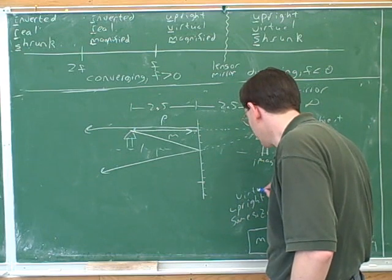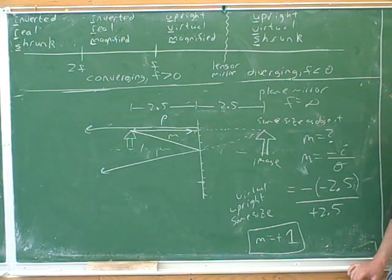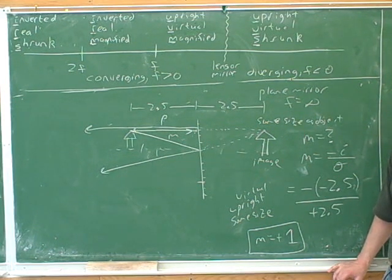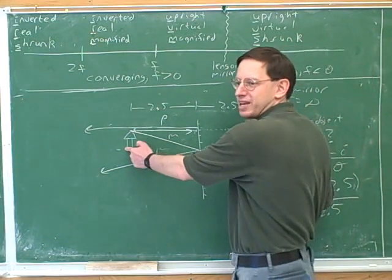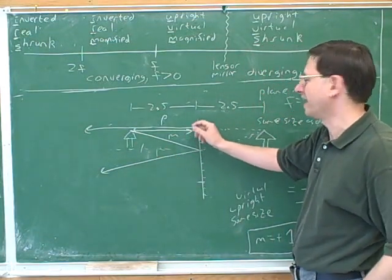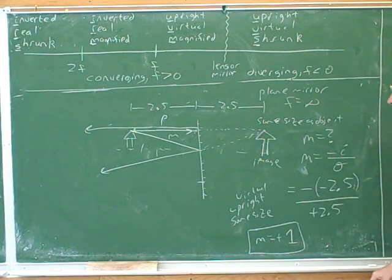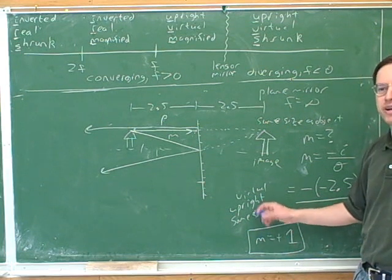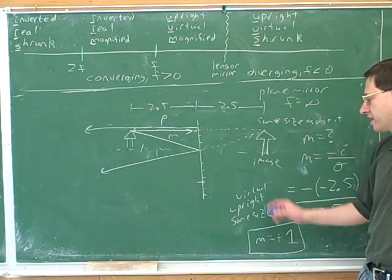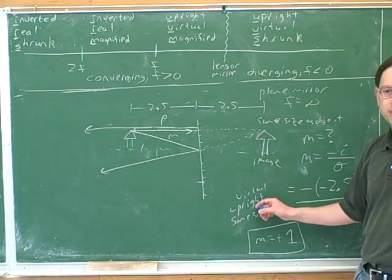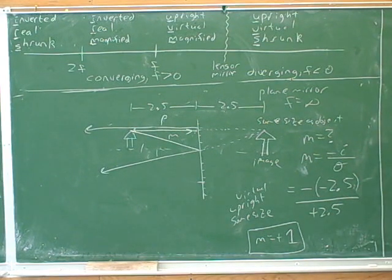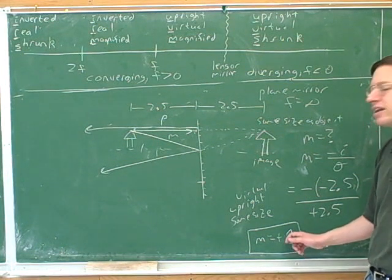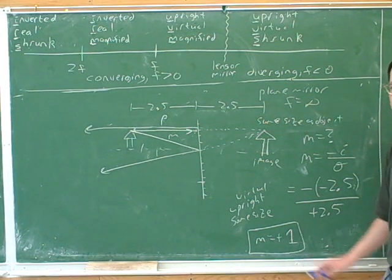We already figured out it was virtual. So now we've figured out all the different characteristics of this image. Does that match our ray tracing picture? Yes — did it come out upright? Yes. And did it come out the same size? If I were a better drawer, it would be the same size — they're pretty much the same size. This confirms what we got from our ray tracing picture. Is this just common sense? Is this what you see when you look in the bathroom mirror? You see that you're an image that looks like it's behind the mirror — virtual. You see an image that's upright, and it looks about the same size as you. So this is all just common sense. We should note that an M magnitude of 1 means same size — there's a very good chance that could come up.